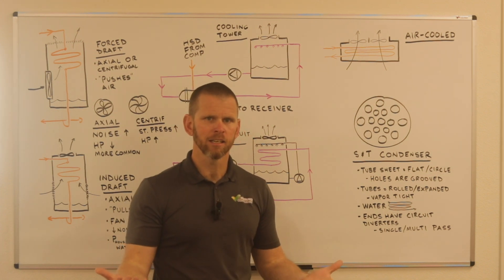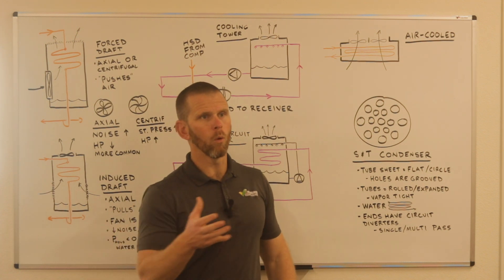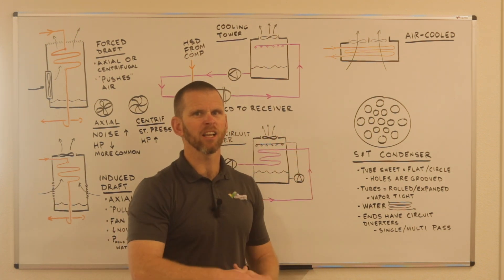You can have a single pass shell and tube heat exchanger in which the water flows through one time and exits on the other end. That's not the most common. You have a two pass where the water's diverting through half the tube, and then it comes back through.